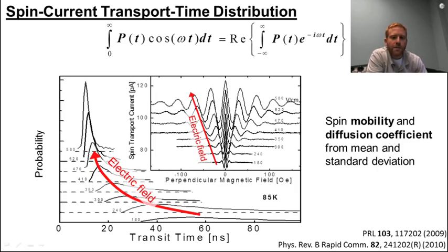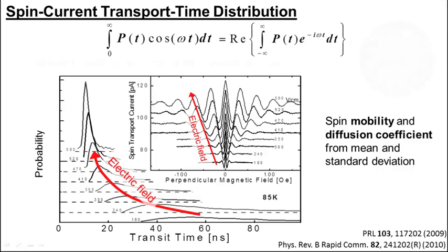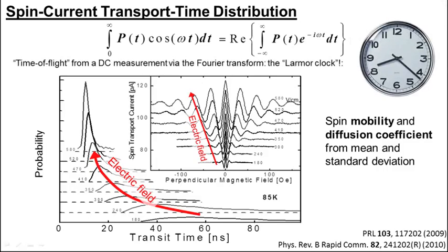This method of obtaining time of flight is called the Larmor clock. We don't make an explicit measurement of transit time. We measure the angle of rotation at a known angular velocity, the same way we measure time from an analog clock. We know the rotation speed of the hand for the clock, 360 degrees per hour for the minute hand, and infer time from the instantaneous orientation. We're likewise measuring the spin orientation and determining how long it precessed in a known magnetic field.